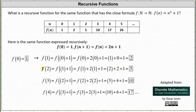Now that we know f(2), we can determine f(3). To determine f(3), notice n = 2, since 2 + 1 = 3, giving us f(3) = f(2) + 2(2) + 1. We know f(2) = 5, so f(3) = 5 + 4 + 1, which equals 10.